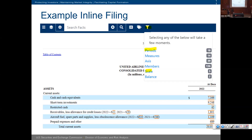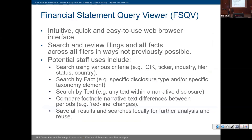One of the tools we have is called the Financial Statement Query Viewer (FSQB). It allows filers and staff to search and review filings across all facts. You can search using criteria such as CIK, industry, filer size, specific disclosure type, or specific taxonomy element. You can also search by text — doing a keyword search in a narrative disclosure — and compare footnotes. Because the footnotes are structured we can do a redline, allowing us to quickly see how a footnote changed over time, why it changed, or whether a footnote was skipped entirely.